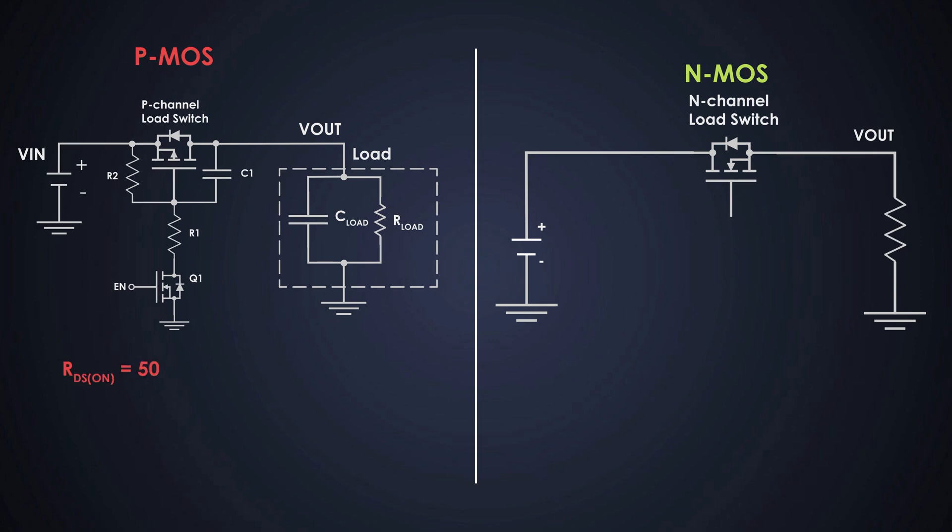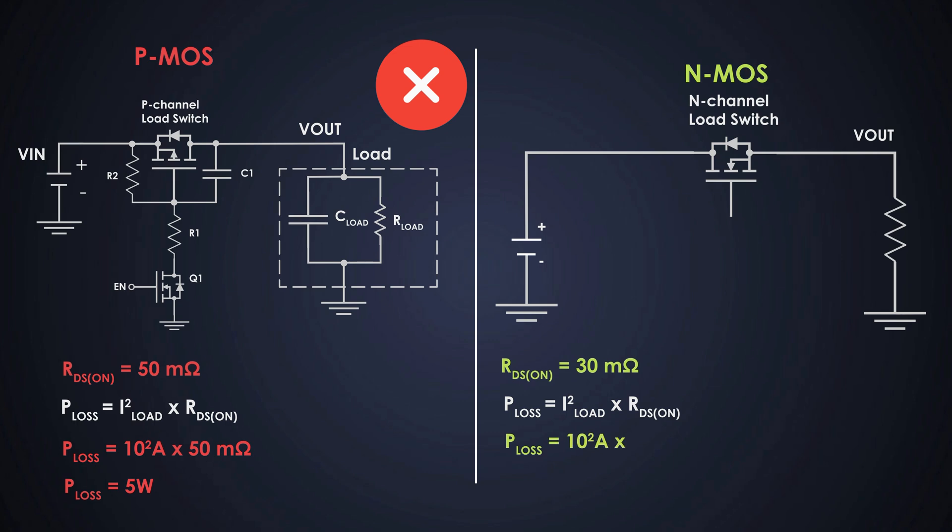Then, for a 10A load current, a PMOS with 50mΩ resistance will dissipate 5W of power. That's a lot. In comparison, an N-channel MOSFET with only 30mΩ RDS(ON) will dissipate just 3W.